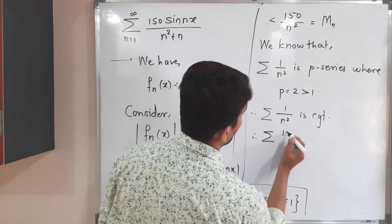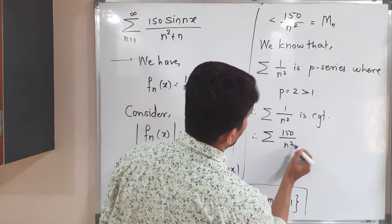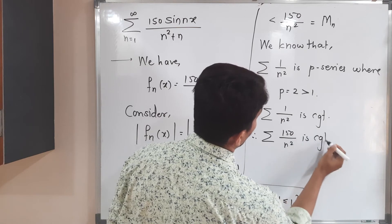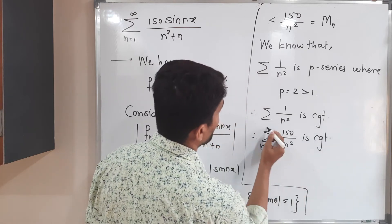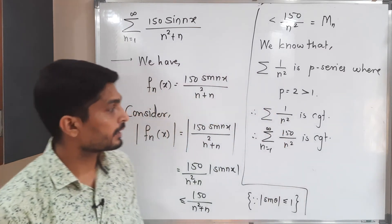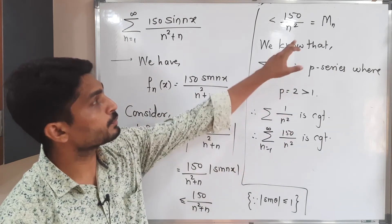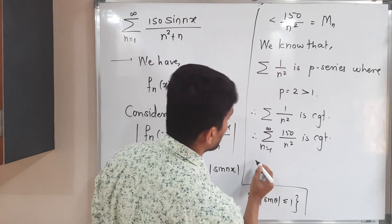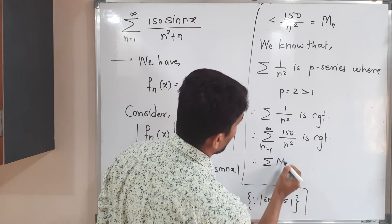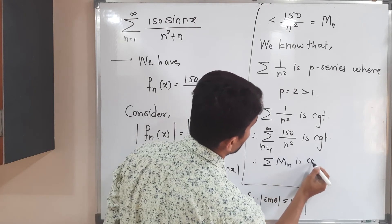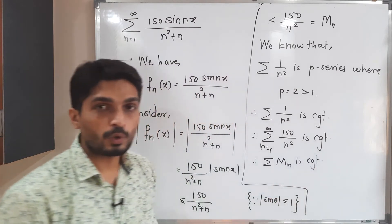So therefore summation 150 divided by n square is convergent. Obviously here n runs from 1 to infinity. So 150 upon n square, which is M_n, therefore what can we write? Therefore summation M_n is convergent.